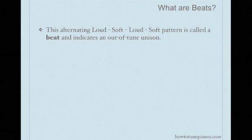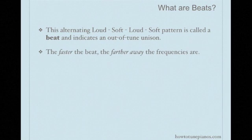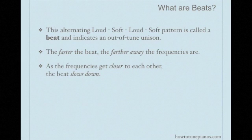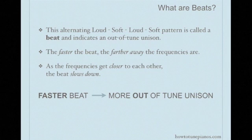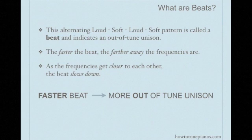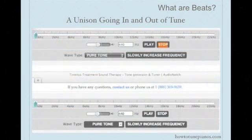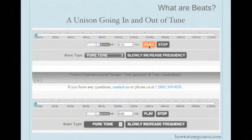This alternating loud-soft-loud-soft pattern is called a beat, and it indicates an out-of-tune unison. Some important points: the faster the beat, the farther away the frequencies are. As the frequencies get closer to each other, the beat slows down. And in fact, when the two frequencies are exactly the same, the beat disappears. So for piano tuning, when tuning unisons or even intervals, if we hear a fast beat, that means it's more out of tune. If the beat slows down, that means the unison is becoming more in tune. Listen as we show this on the computer tones.